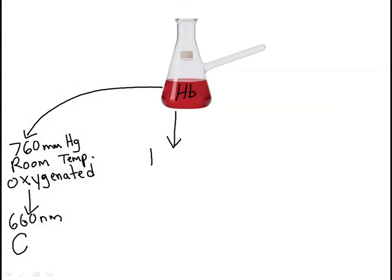Next, you're going to reduce the air pressure in the flask, which leads to a decrease in the partial pressure of oxygen. You'll do this using the vacuum manometer. You'll then gently agitate the sample for about a minute, which increases the exposure of the hemoglobin to the reduced pressure of oxygen and allows it to reach equilibrium. Again, you're going to read the absorbance at 660 nanometers. In our saturation equation, this absorbance value is B. You'll repeat this step several times, each time decreasing the air pressure in the flask by a specific increment. The absorbance of the sample after each pressure reduction is the letter B in our saturation equation.